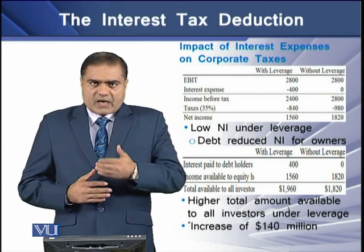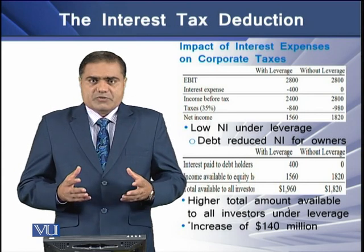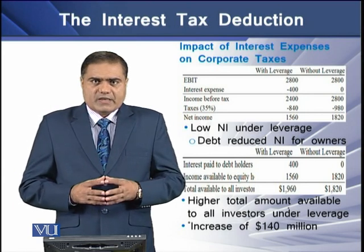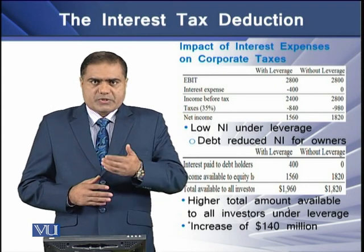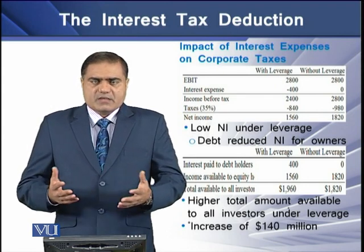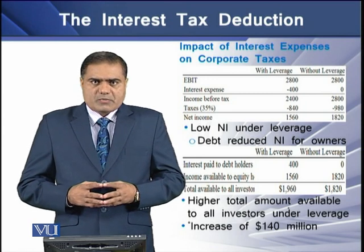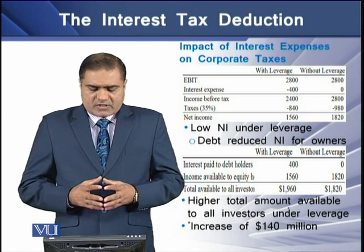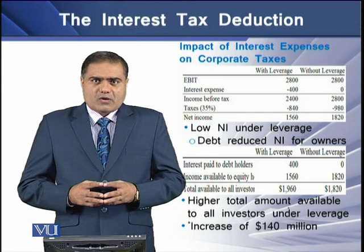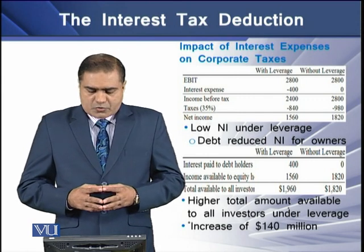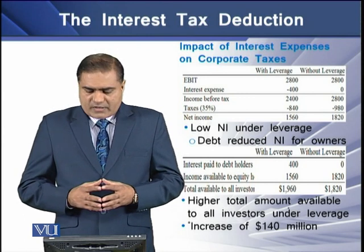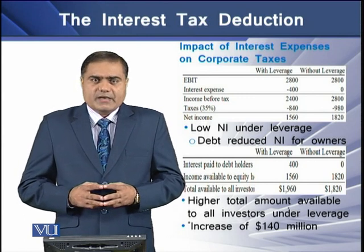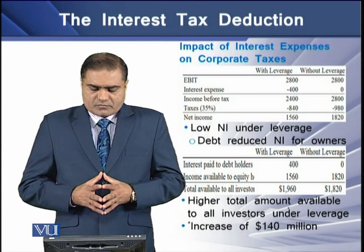For the unlevered firm, there is no interest payment, so its earnings before interest and taxes are directly converted into earnings before tax at the same amount. Assuming a tax rate of 35%, the tax amount for the levered firm comes to $840 million, whereas for the unlevered firm it comes to $980 million.